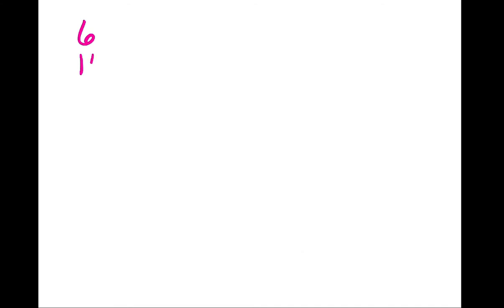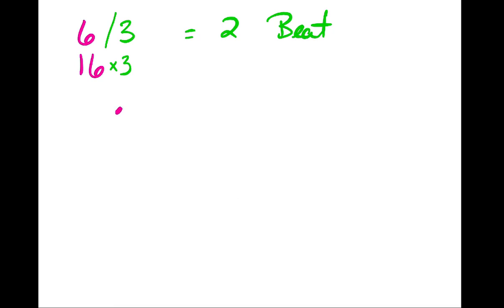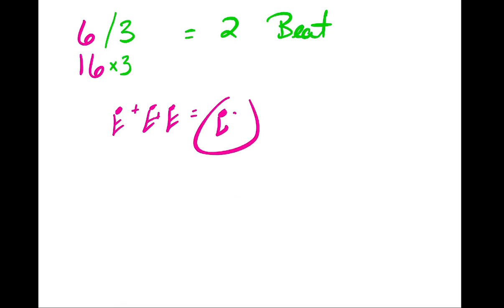Let's try 6/16. Take the top number divided by three: I have two beats in the measure. The bottom number gives me sixteenth notes as the division value, and three sixteenth notes add together to equal a dotted eighth — so my beat is a dotted eighth note. Remember: the top number always tells you about division values, so divide by three for beats; take the bottom number and multiply by three to get your beat value. Good luck!